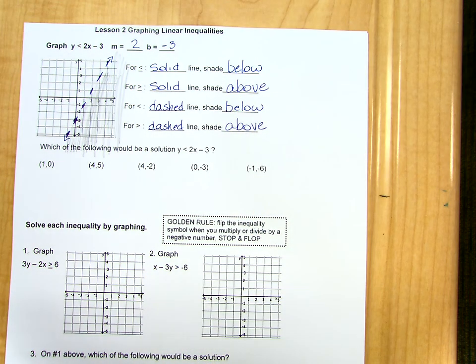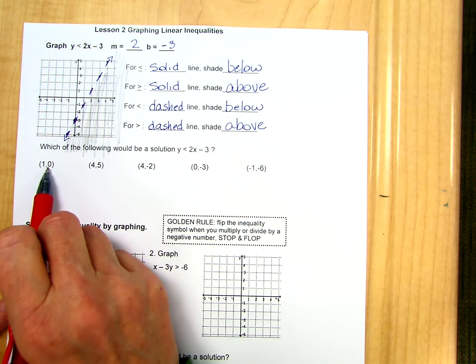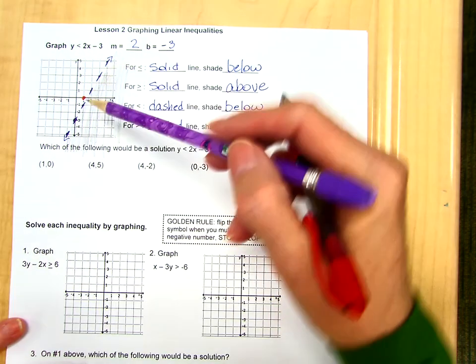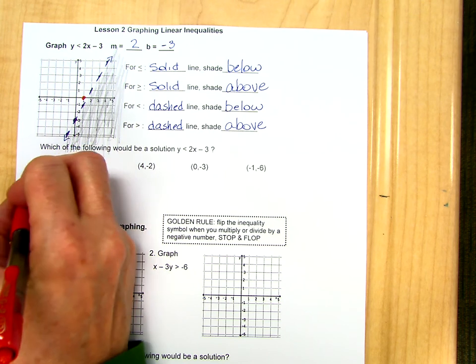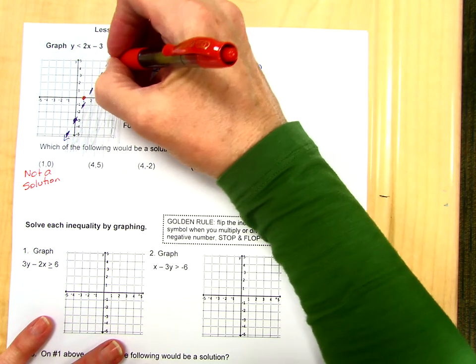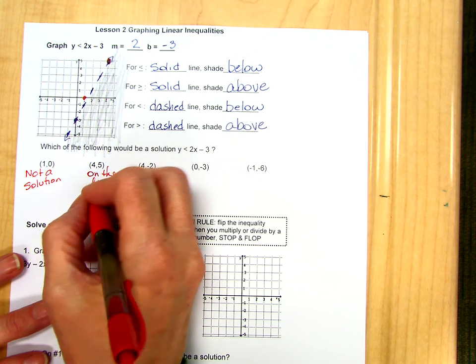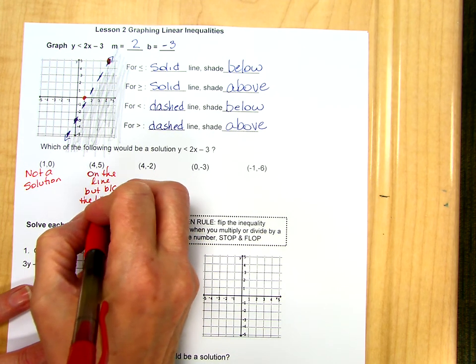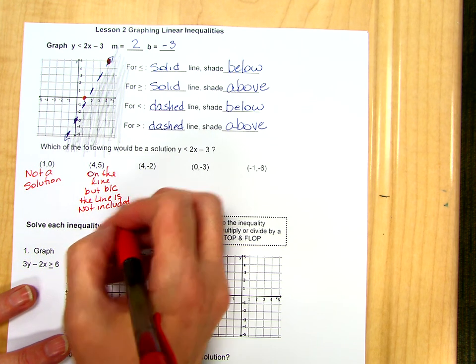We are given several points here and we are asked which of these are solutions to this inequality. So all we have to do once it's graphed is plot these points. If I go over 1 and up 0, I'm here. I am not in the shaded region. Since I'm not in the shaded region, this is not a solution. Over 4 and up 5, if I go over 4 and up 5, I'm actually on the line, but the line is not included, so because the line is not included, the point is not a solution.